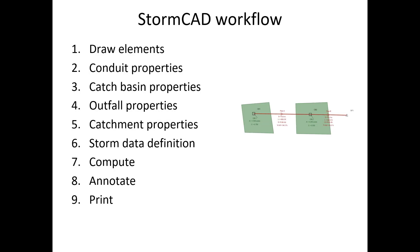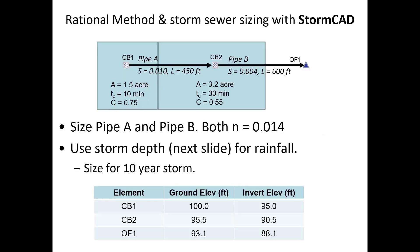Here is an outline of the workflow — I've handed this slide out in case you want to take some notes. This isn't included in the lecture notes PDF; I put it together after working through the demo so you could remember the steps to follow when setting up a model. Here is the system we're going to size — the same two-basin, two-pipe network we already looked at with the spreadsheet — and we're going to see if we get a similar answer.